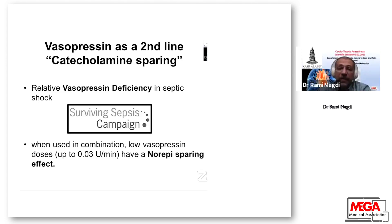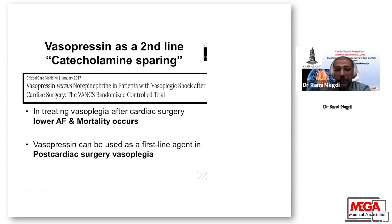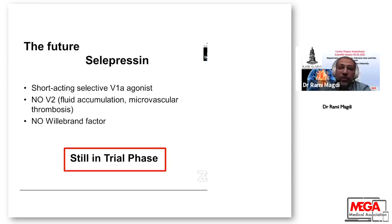Studies on septic shock, referenced in the Surviving Sepsis Campaign, show a relative vasopressin deficiency. When used in combination, low-dose vasopressin — up to 0.03 units per minute — has a norepinephrine-sparing effect. A paper published in Critical Care Medicine compared vasopressin to norepinephrine in patients with vasopressor shock after cardiac surgery, showing lower rates of atrial fibrillation and mortality. Vasopressin can be used as a first-line agent post-cardiac surgery. Future research focuses on selepressin — a short-acting, selective V1a agonist with no V2 activity, no fluid accumulation, no microvascular thrombosis, and no von Willebrand factor stimulation — though it remains in the trial phase.